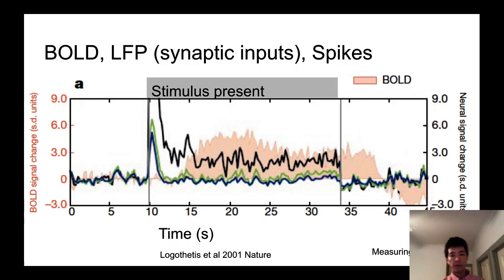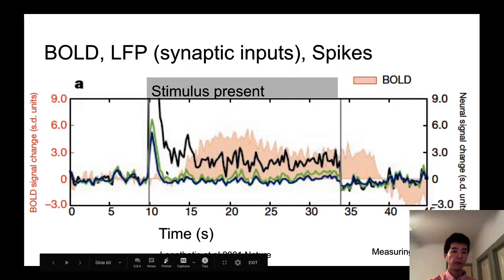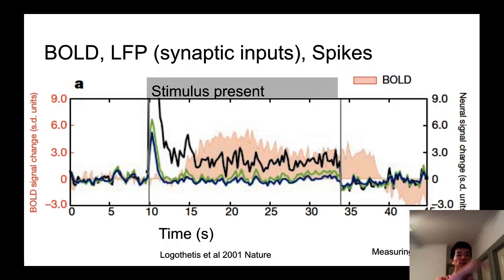What this means for our purpose is that BOLD signals that fMRI measures and the local population spikes can be completely dissociated. When the spikes happen a lot, BOLD signals can be completely silent. And when the spikes go down to baseline, BOLD signals can substantially increase. Why is that? One potential explanation rests on LFP, local field potential.